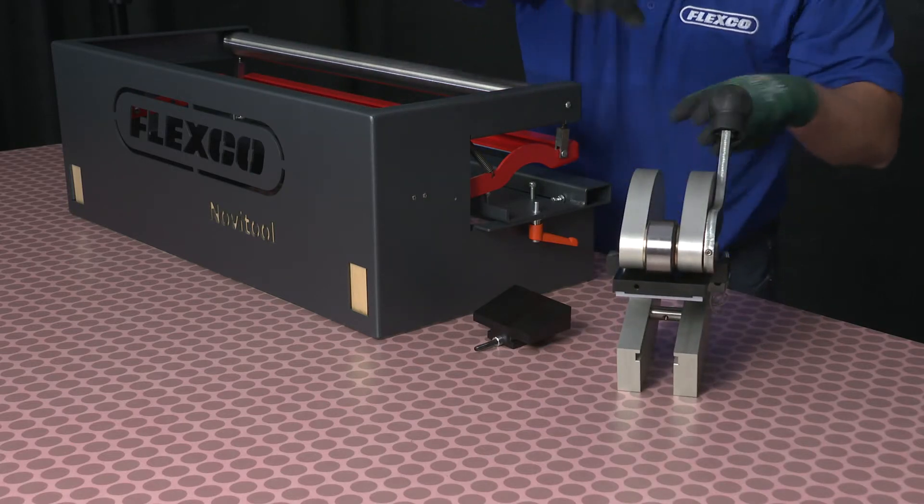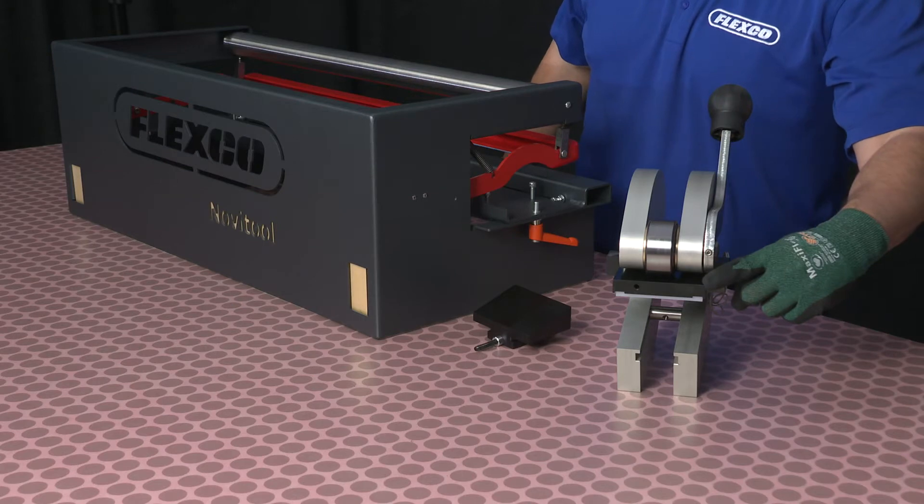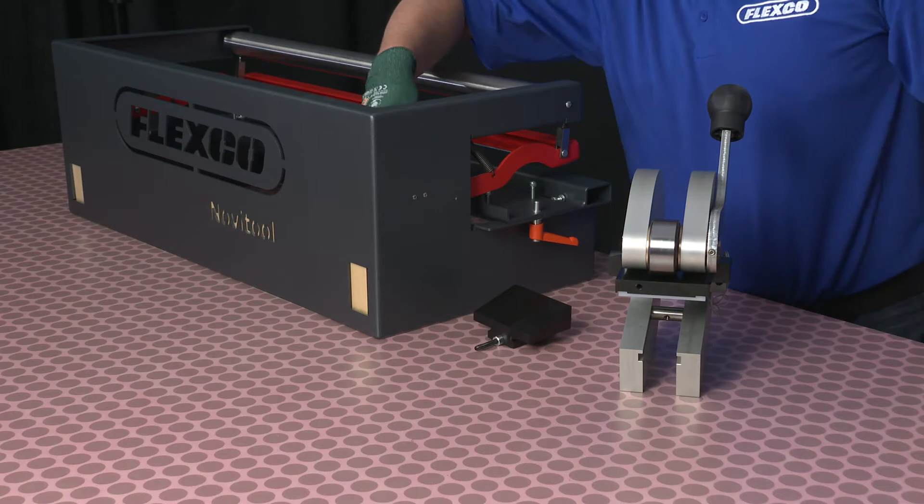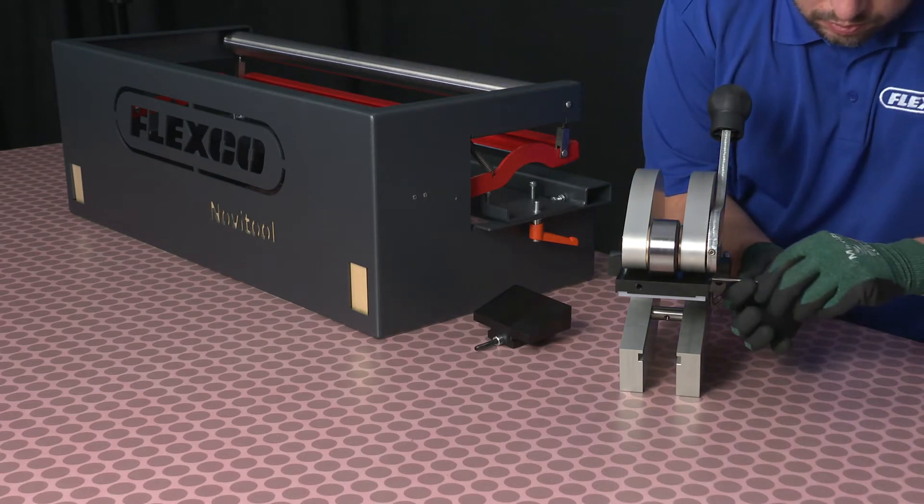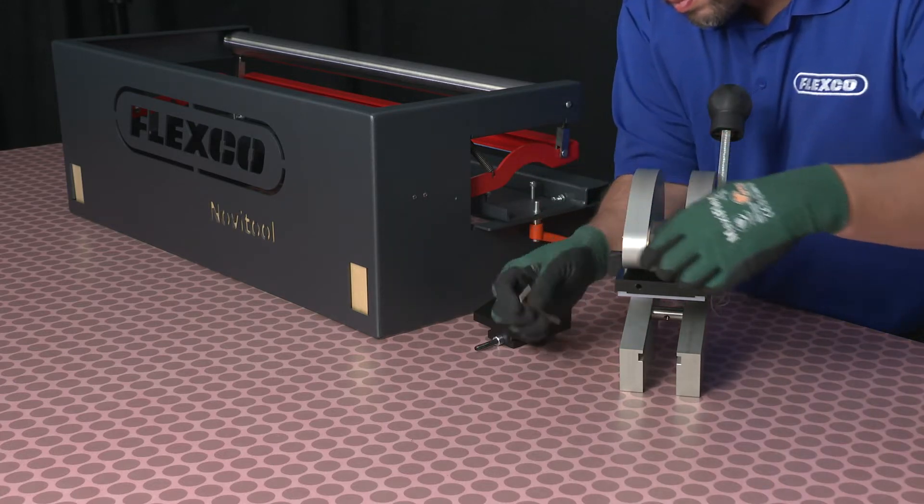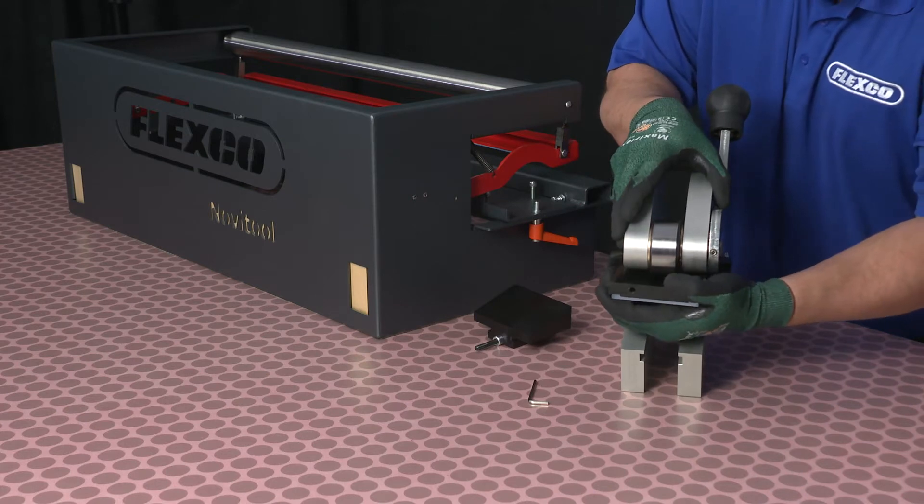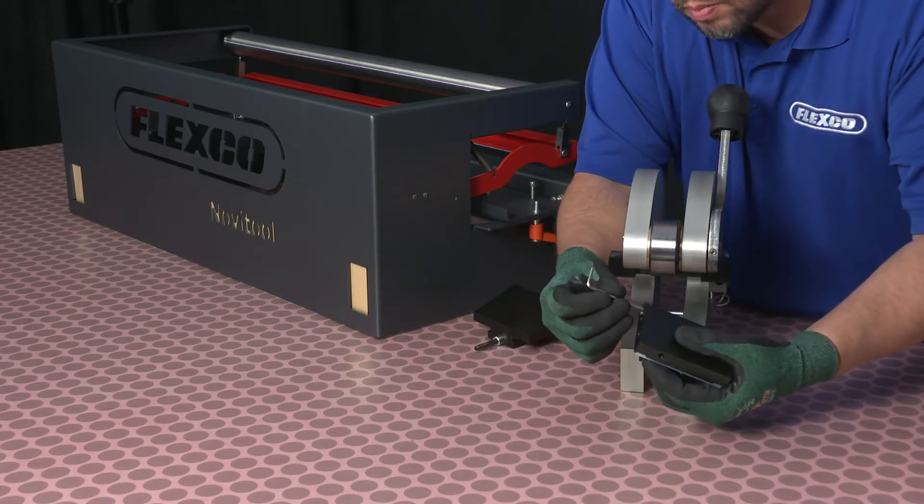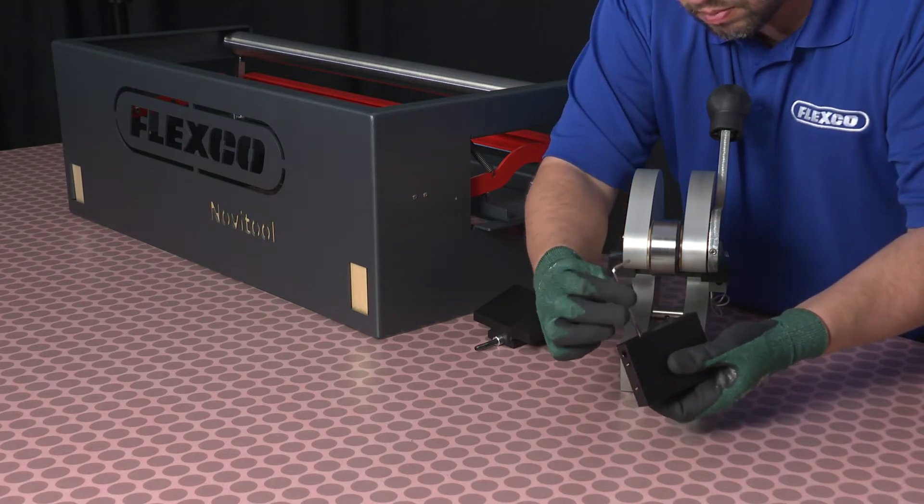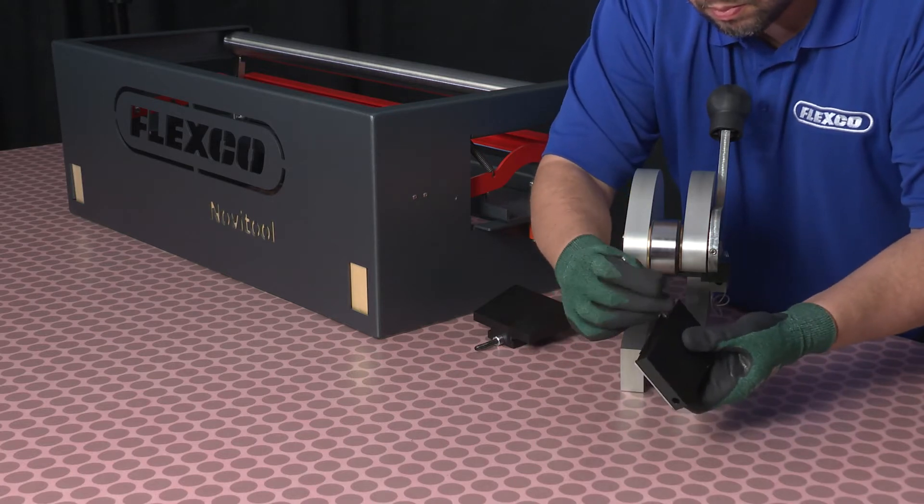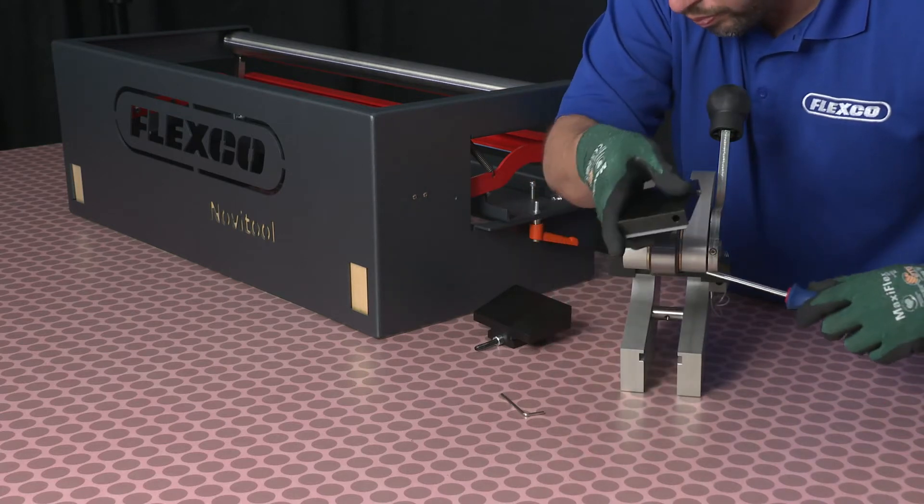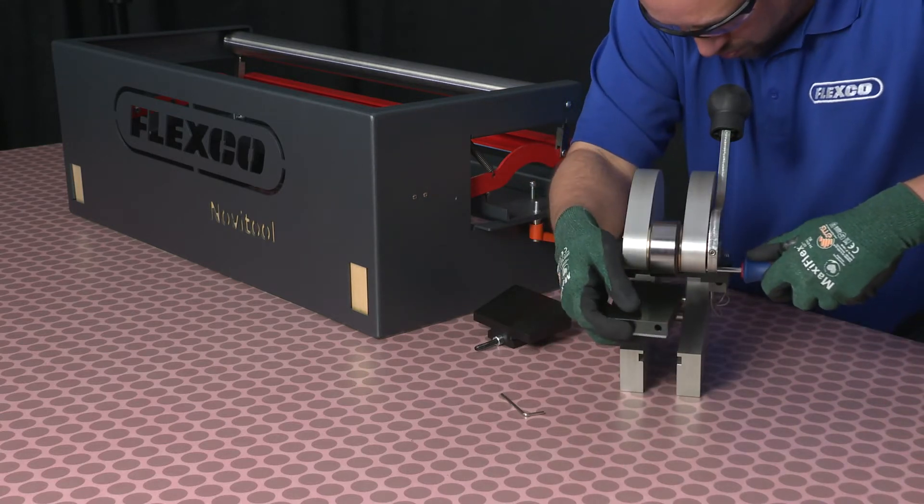The punch block can be positioned two ways: vertically for longer fingers and horizontally for shorter fingers. Loosen the two set screws that are holding the punch block in the current horizontal position. Slide the punch block off the two spring pins and remove the two set screws, replacing them so they can lock the punch block in the vertical position. Insert the two spring pins into the guide holes of the punch block, securing it in place with the two set screws.